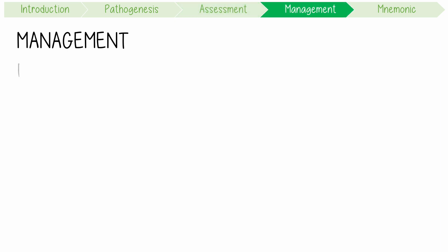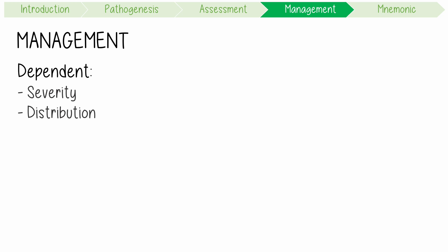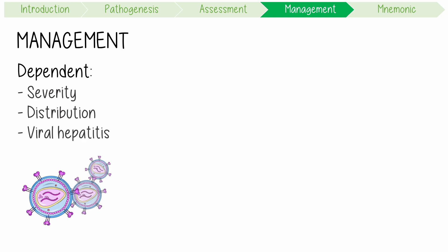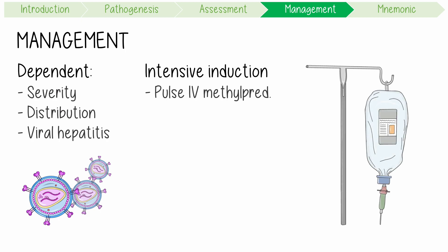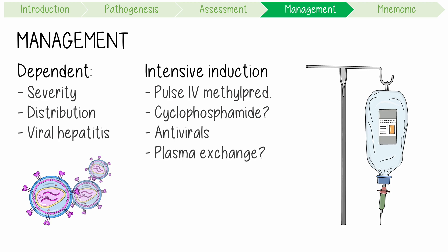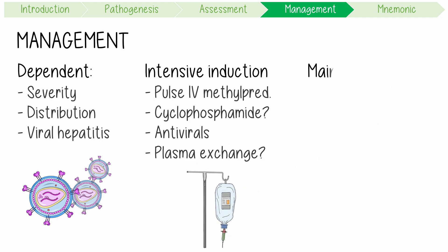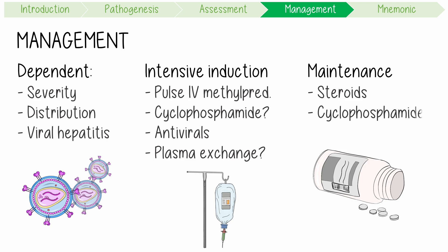The management of PAN is dependent on severity, distribution of disease, and presence or absence of viral hepatitis. Severe multi-system disease requires intensive induction therapy with pulse intravenous methylprednisolone and then consideration of combination cyclophosphamide. Patients with viral hepatitis should be commenced on antivirals and plasma exchange should be considered. For remission maintenance, long-term high-dose oral steroids, often with cyclophosphamide, are continued until remission is achieved.